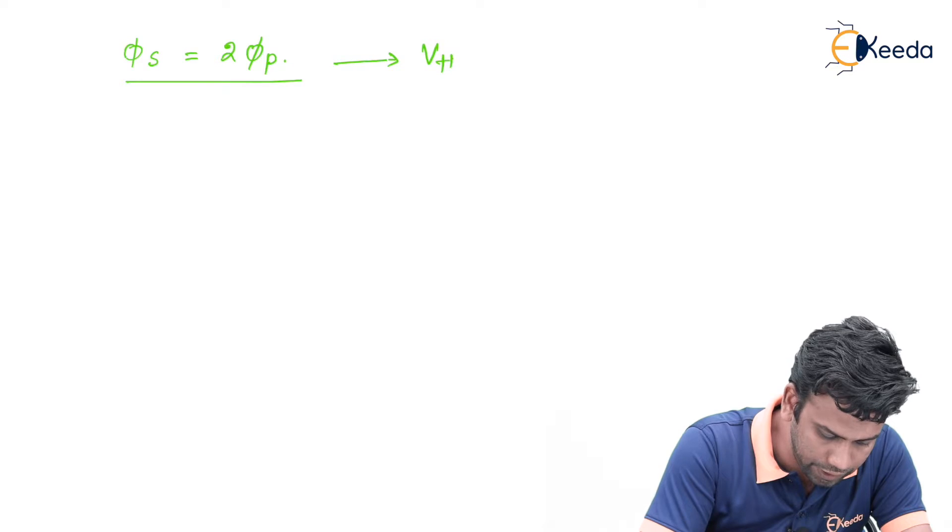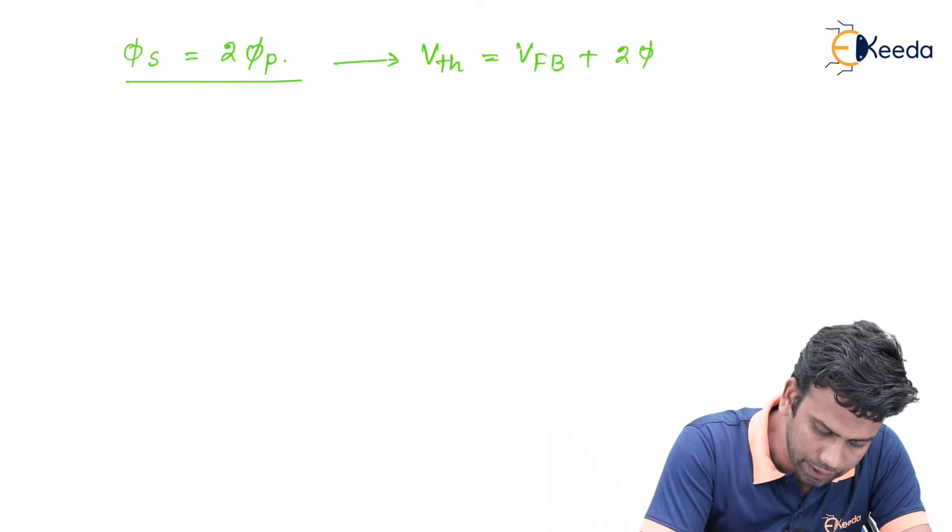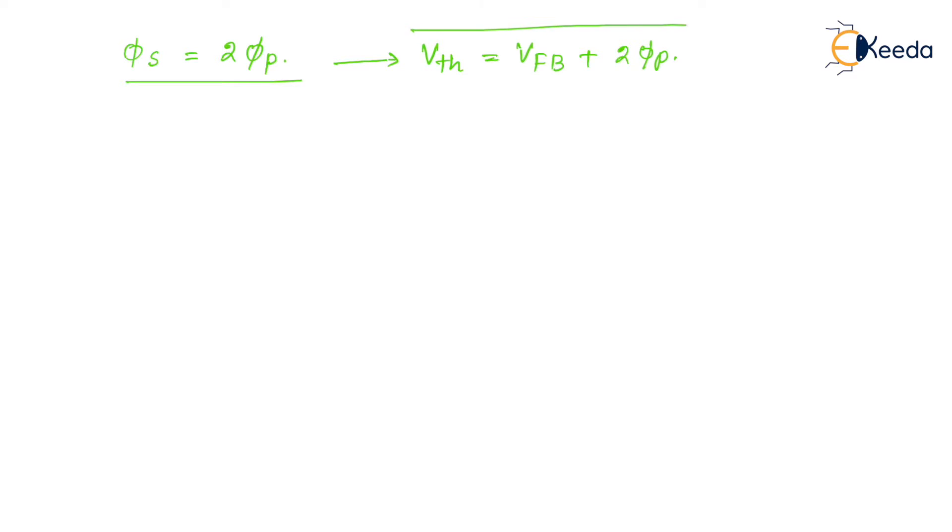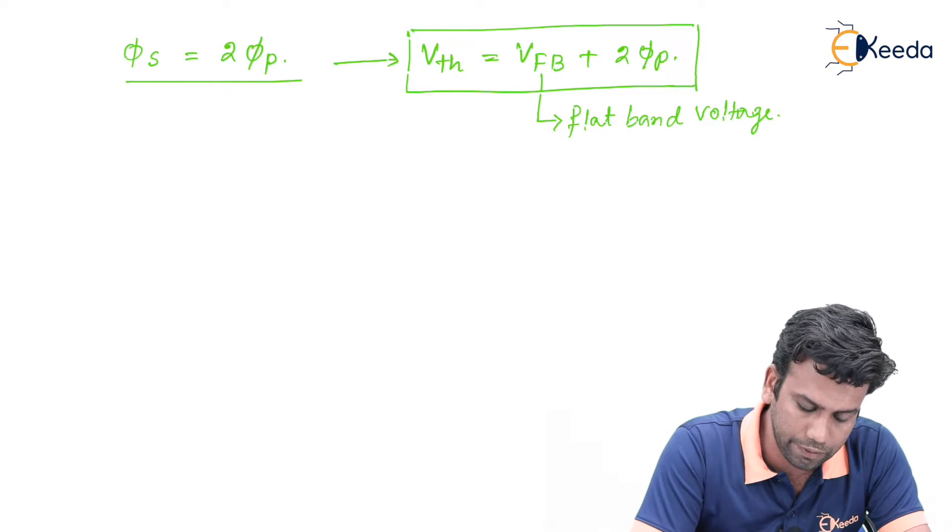Vth is defined by Vfb plus 2 phi p, where Vfb is called the flat band voltage. Later we will discuss what is flat band voltage.